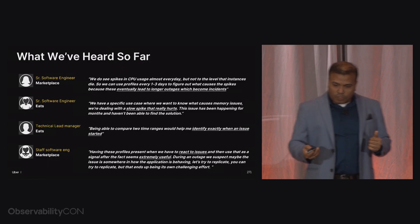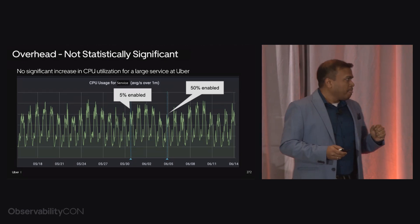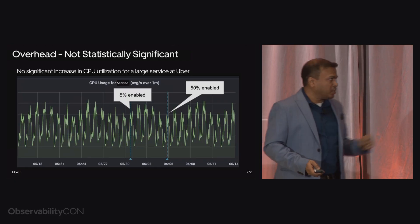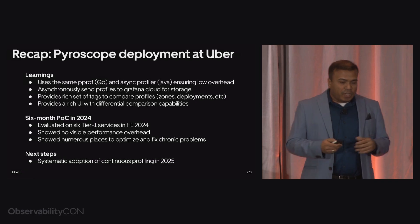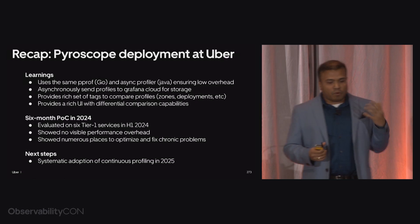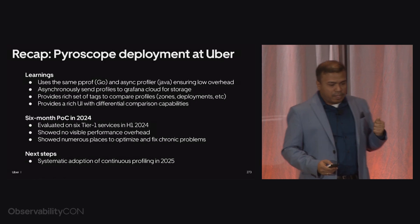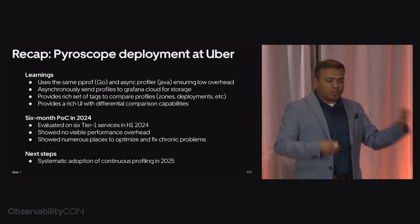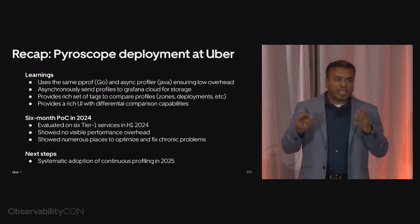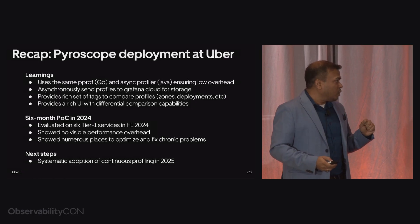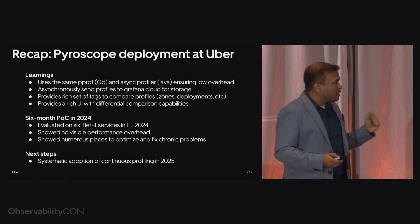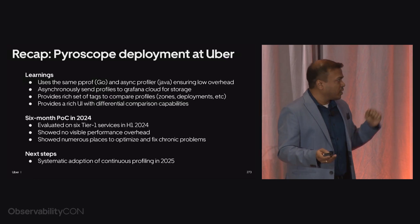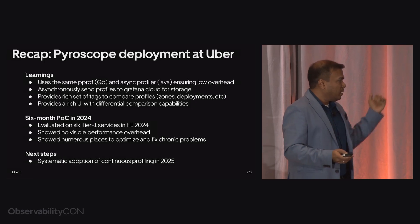Another thing we talked about was overhead. This is a large service at Uber. We enabled Pyroscope for 5% and then 50% of traffic, and we did not see any overhead. This was a very critical decision for rolling out Pyroscope. In summary, Pyroscope uses the same default profiler that Go and Java have, ensuring low overhead. It asynchronously sends profiles to Grafana Cloud for storage, with a rich set of tags to compare profiles across different zones and deployments. We did a six-month POC across six tier-one services and in 2025 are systematically adopting it across all of Uber.